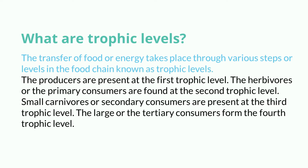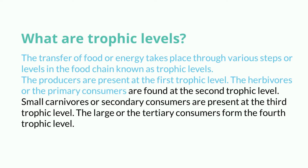The producers are present at the first trophic level. The herbivores, or the primary consumers, are found at the second trophic level.